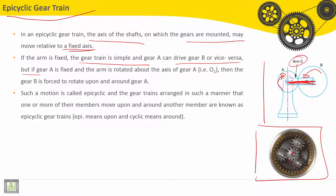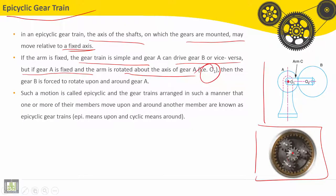But if gear A is fixed, let's see now. If gear A is fixed and the arm is rotated about the axis of gear A, that means around point A or point 1, about this axis, then gear B is forced to rotate upon and around gear A.